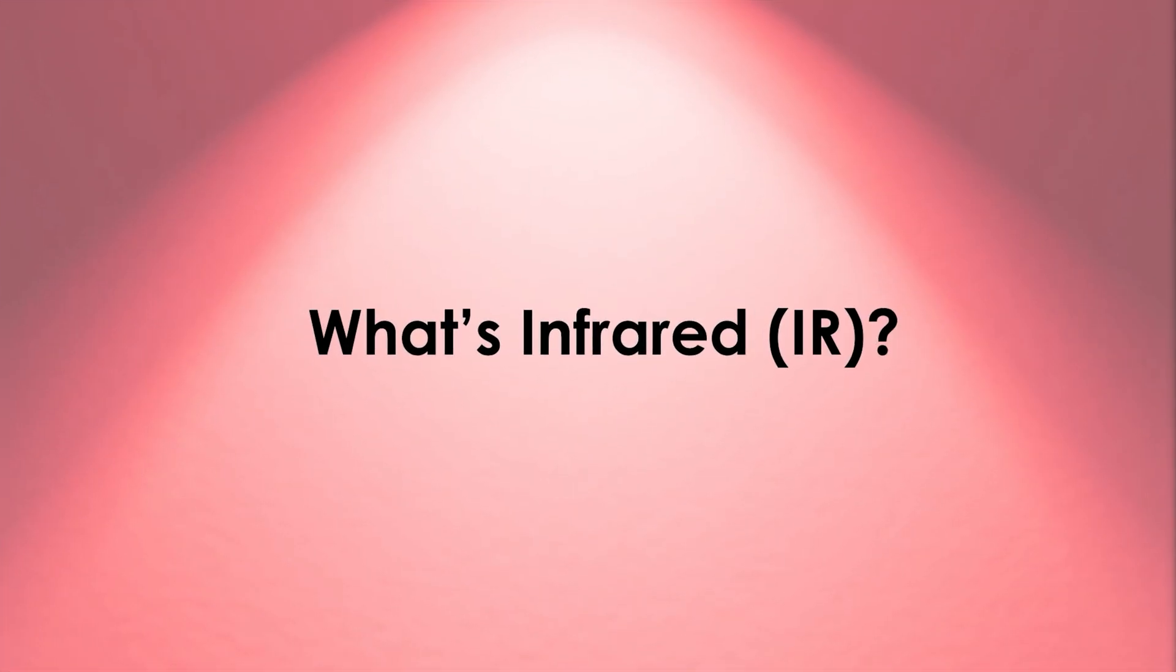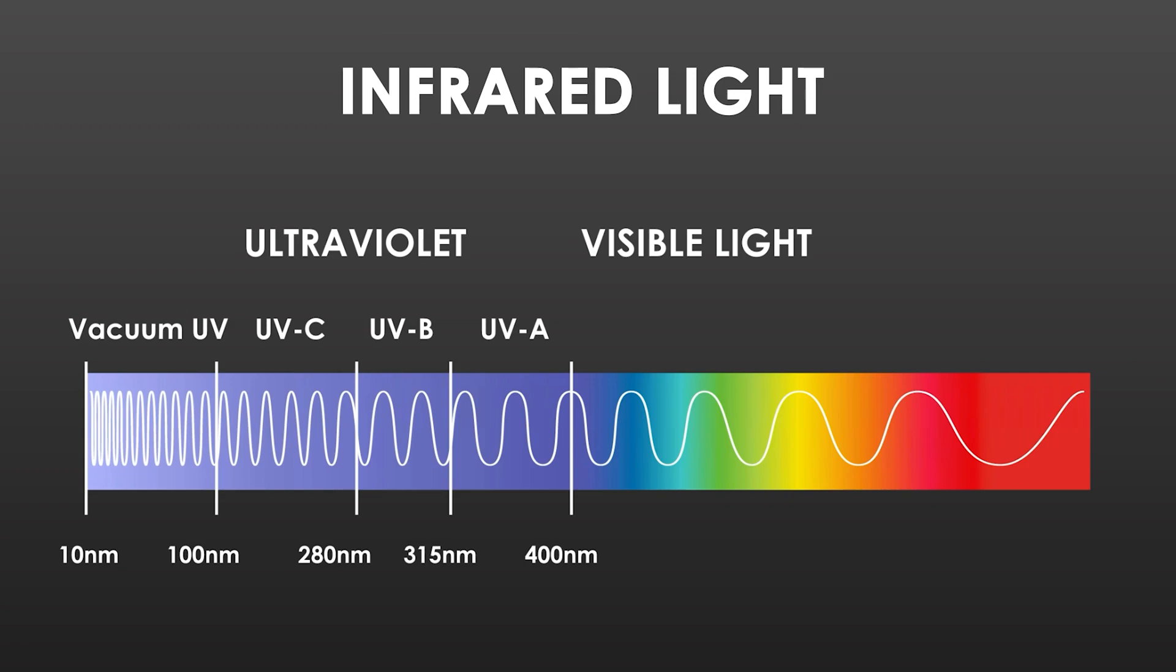What is infrared light? Infrared light has a wavelength of beyond 700 nanometers, and although it is invisible to the human eye, we often feel it as heat.